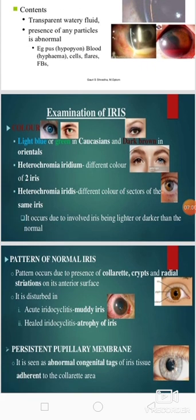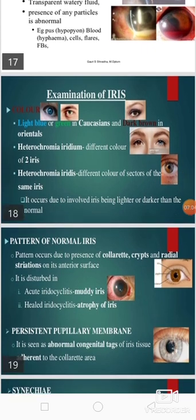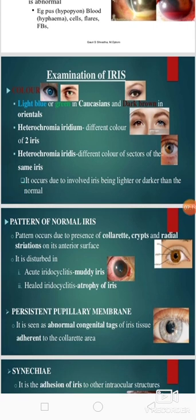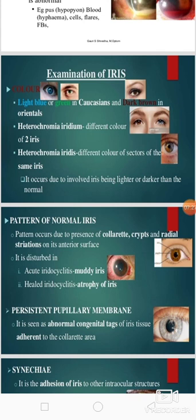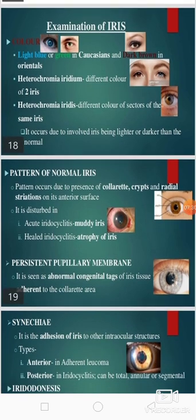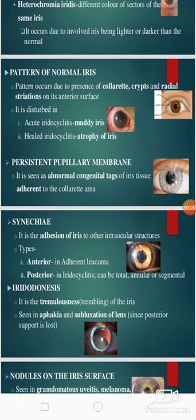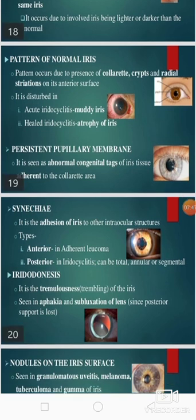Then we should examine the iris. The color of the iris differs in different people — there may be light blue or green color. There are two disorders regarding color: heterochromia iridum, where there is different color of the two irides, and heterochromia iridis, where there is different color of sectors of the same iris. Then we should see the pattern of the normal iris, which occurs due to the presence of collarette, crypts, and radial striations on its anterior surface. The pattern is disturbed in case of acute and healed iridocyclitis.